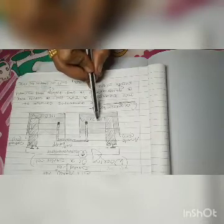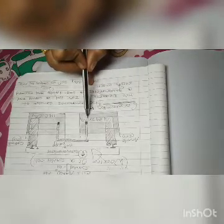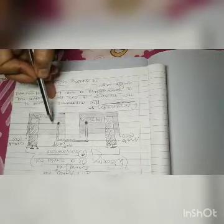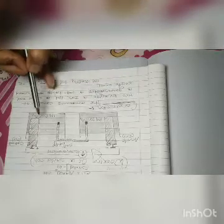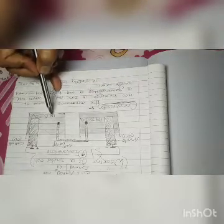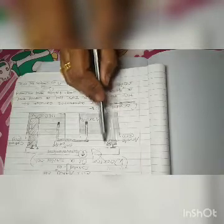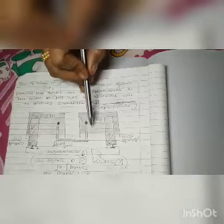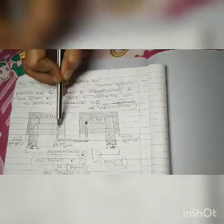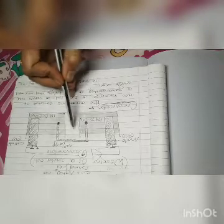The left half cell consists of a zinc rod dipped in zinc sulfate solution, and the right half cell consists of a copper rod dipped in copper sulfate solution. Zinc sulfate is one molar and copper sulfate is also one molar. The zinc rod acts as the anode (negative electrode) and the copper rod acts as the cathode (positive electrode). These two half cells are internally connected by an inverted U-shaped tube known as a salt bridge.